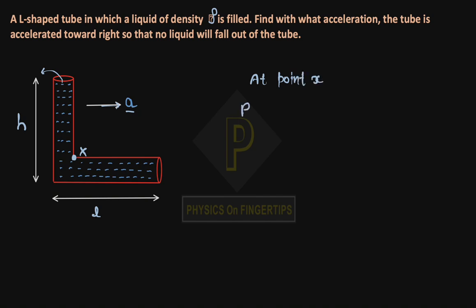At point X, the pressure equation is: atmospheric pressure P₀ plus rho times L times acceleration a equals P₀ plus rho times g times h.